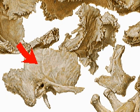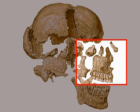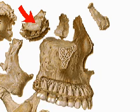The sphenoid bone is a winged structure which runs from eye level to the base of the skull and houses the pituitary gland. The ethmoid is the bone framing part of the eye sockets and the nasal cavity.